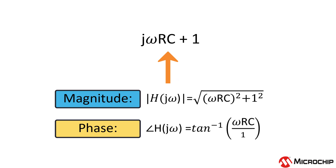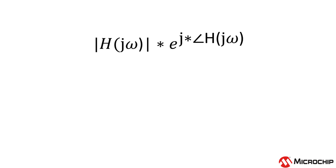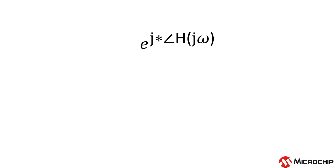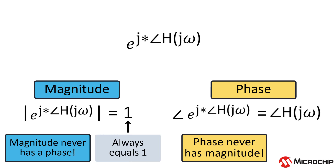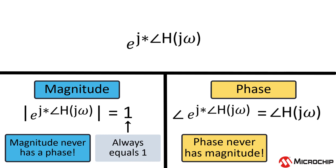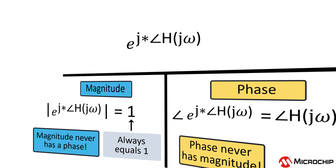Another way to write out a transfer function is in terms of its magnitude and phase. Here you have the magnitude, and here you have the phase. You can do that because E to the J times a real number is only made up of phase and doesn't have magnitude, and because magnitude doesn't have a phase. Just like how a real number and imaginary number are separate, you can think of magnitude and phase as core elements that are totally different, that can't mix and can't be broken down any further. So the magnitude of H of J omega times E to the J times the phase of H of J omega is a perfectly legitimate way to write this out.